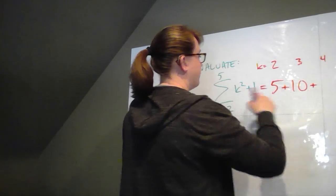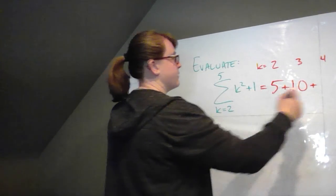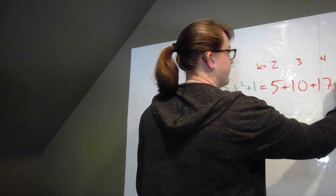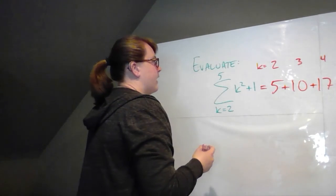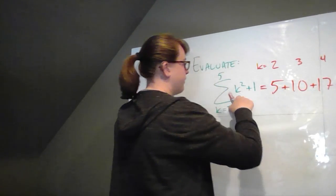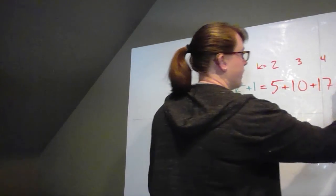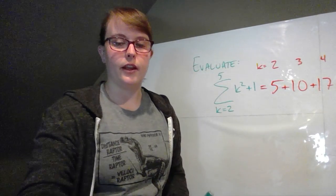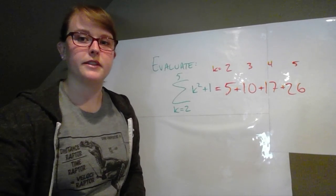Then for k equals 4, 4 squared is 16. 16 plus 1 is 17. And then lastly, when k equals 5, 5 squared is 25 plus 1 is 26. So that's all of it expanded out, and now you can actually see it.